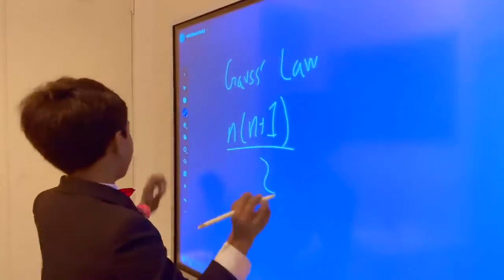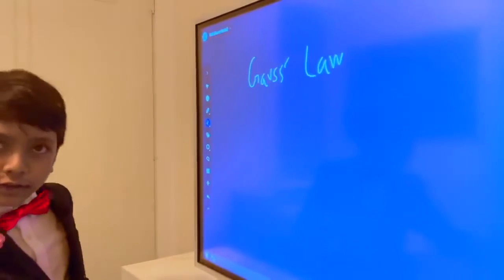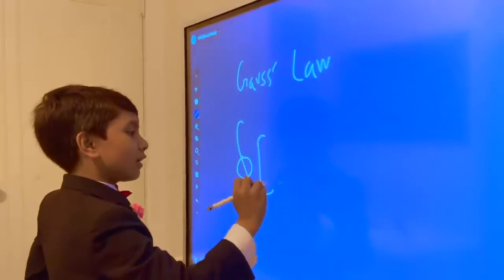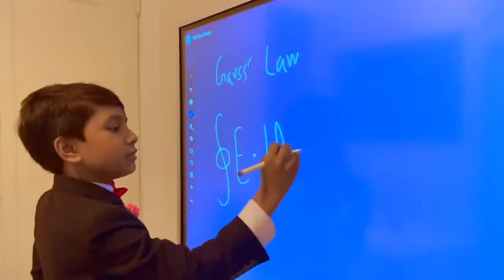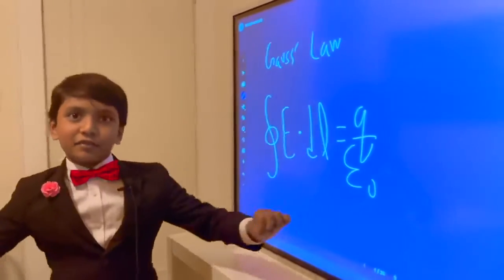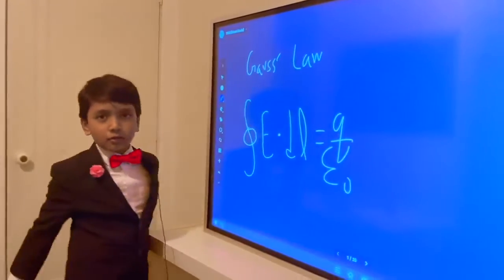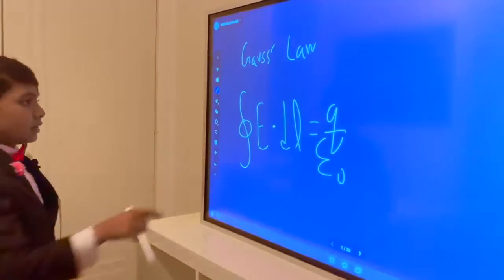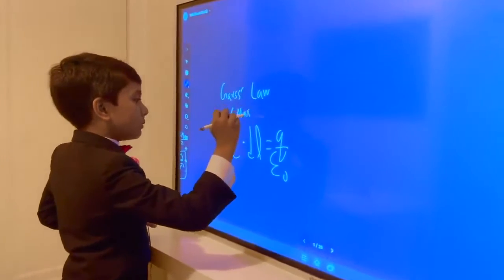But Gauss's law is not this. Remember, it's not that. It's not N times N minus 1 either. But rather, it's this monster. E dot DL is equal to Q over epsilon R. There's another version of this equation that's a differential form, but we're not getting into that. So remember, closed integral means we're integrating around a closed loop. And that is Gauss law, which is also Maxwell equation 1.